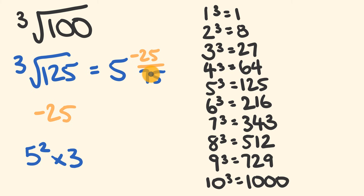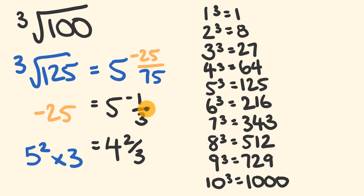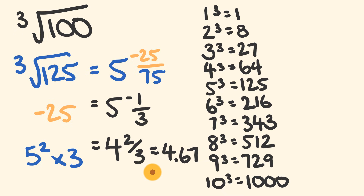For the final part: 5 squared is 25, multiplied by 3 gives 75. So we have negative 25 over 75, which simplifies to negative 1 over 3. We treat this as 5 minus one third, giving us four and two thirds, or approximately 4.667. The actual cube root of 100 is 4.64 — not as close as the last example, but still pretty good.